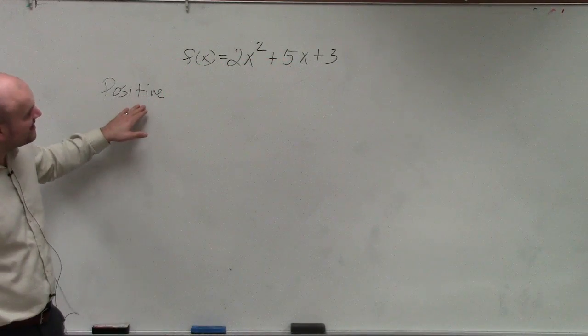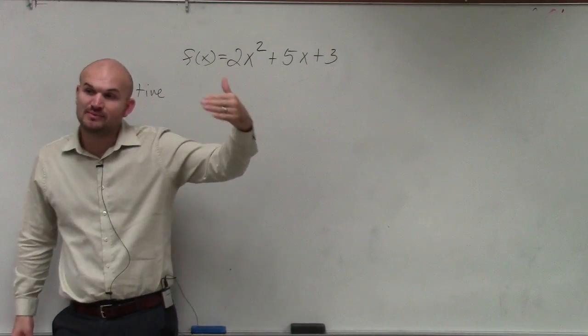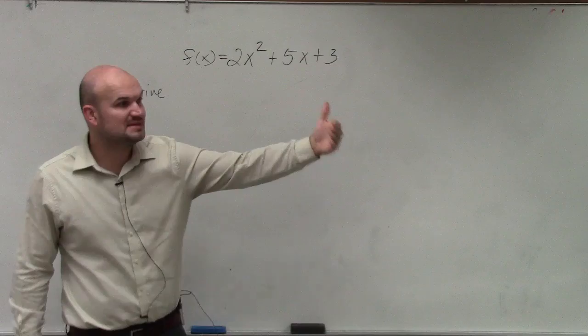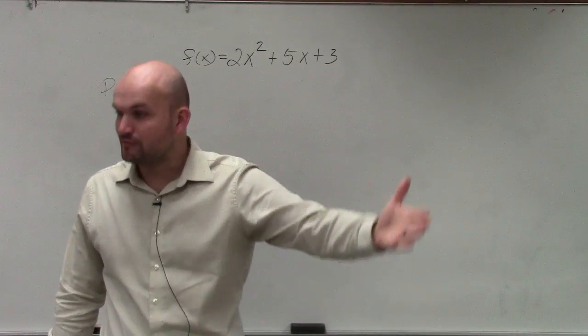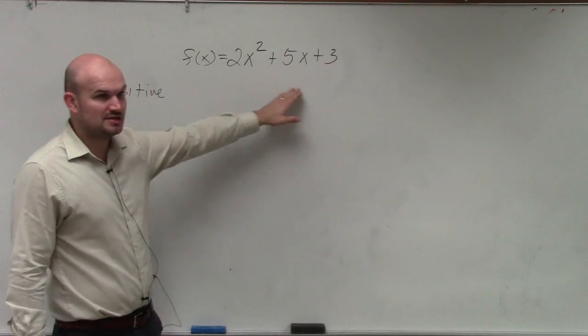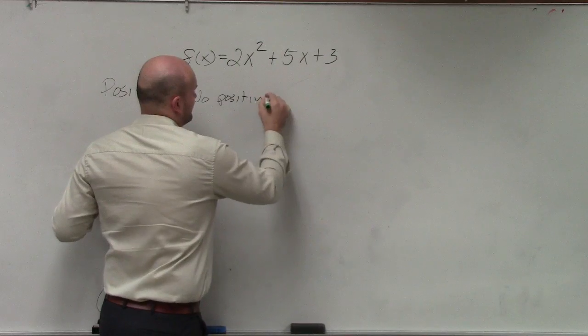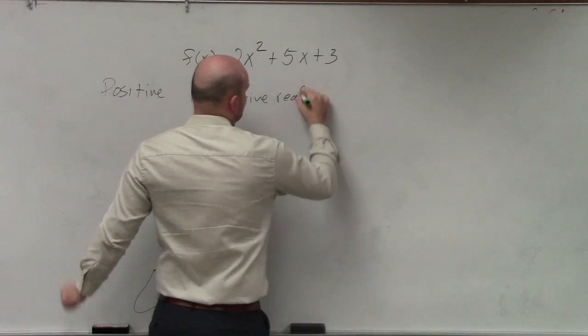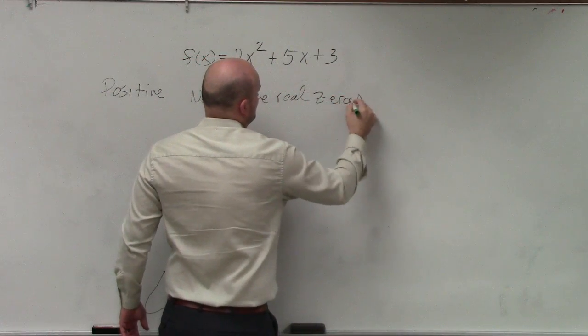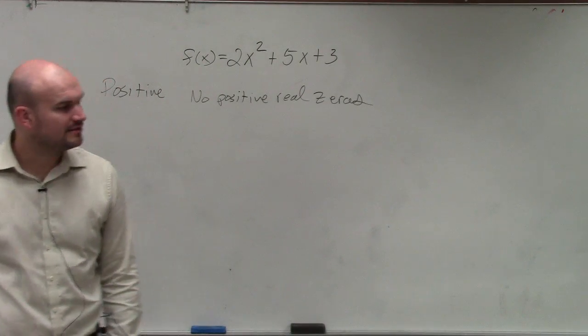So anyways, to find the number of positive real solutions, all you're going to do is count the number of sign changes. Any time you have a term that's positive that goes and the next term is negative, that's a sign change. Any time you go from a negative term to a positive term, that's a sign change. So do you guys see any sign changes here? No. So guess what? There's no positive real zeroes.